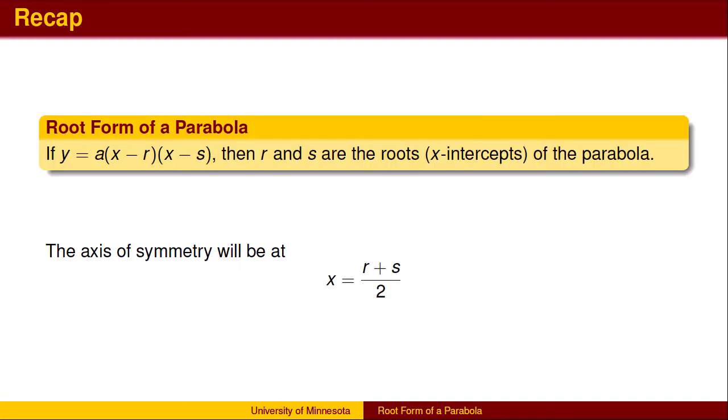To recap, when a quadratic is factored, the roots can be determined from the factors by the factor-root theorem. The axis of symmetry will be the average of the two roots.